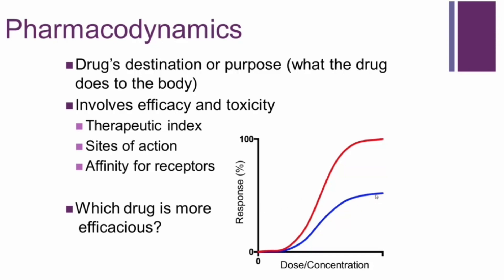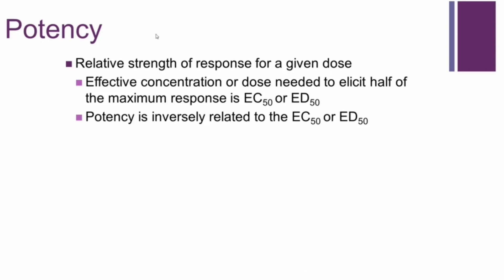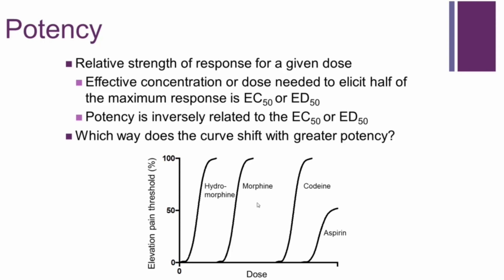Different drugs have different concentration versus response relationships related to efficacy. A drug reaching only 50% response is less efficacious than one reaching 100% response. Potency is a pharmacodynamic term related to the relative strength of response for a given dose. The effective concentration or dose needed to elicit half the maximum response — called EC50 or ED50 — are important terms. Potency is inversely related to the EC50 or ED50: as the dose-response curve shifts to the left, drugs are more potent; shifting right means less potent.